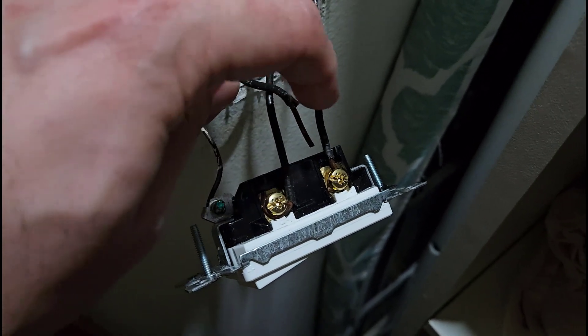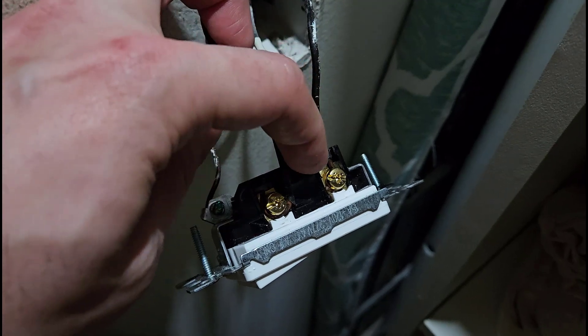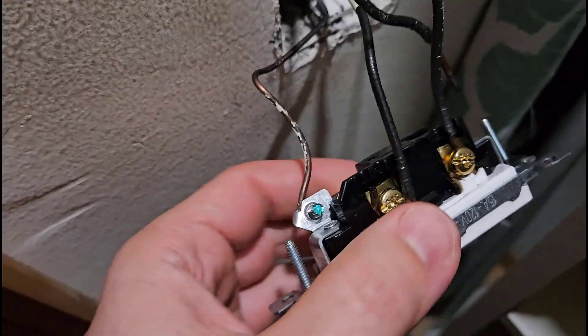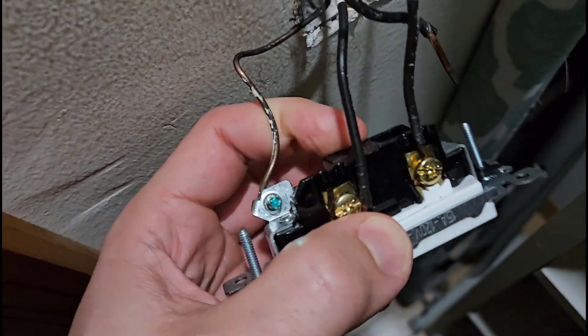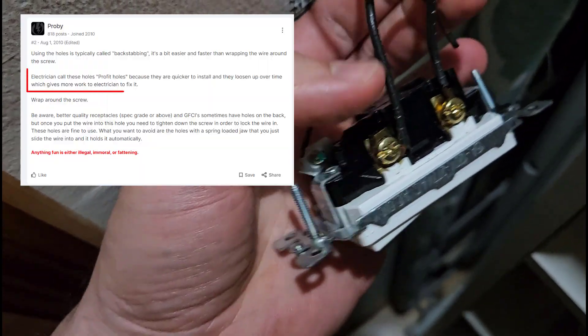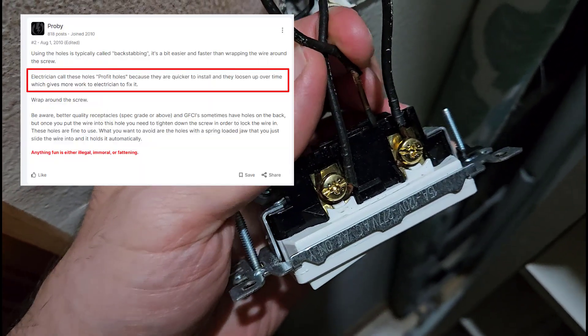It had four wires and two of them were connected using the light switch itself. So one was connected to this screw and one was pushed into the hole on the back of the switch. In general it's considered better practice to use the screws because the wires are more likely to pop out of the holes eventually.